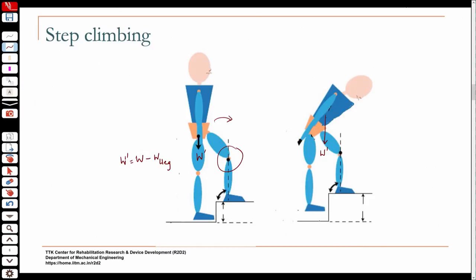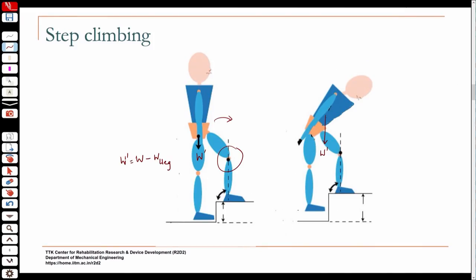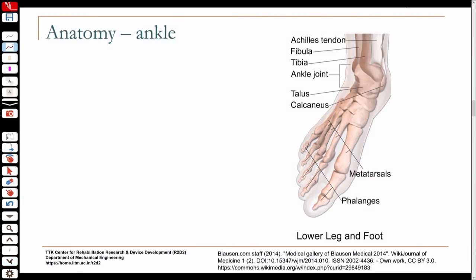Able-bodied people also use this strategy: if you encounter a step that is higher than normal, the tendency is to lean forward in order to climb the step. These are strategies we use, and now you know how to look at the forces at that knee interface.